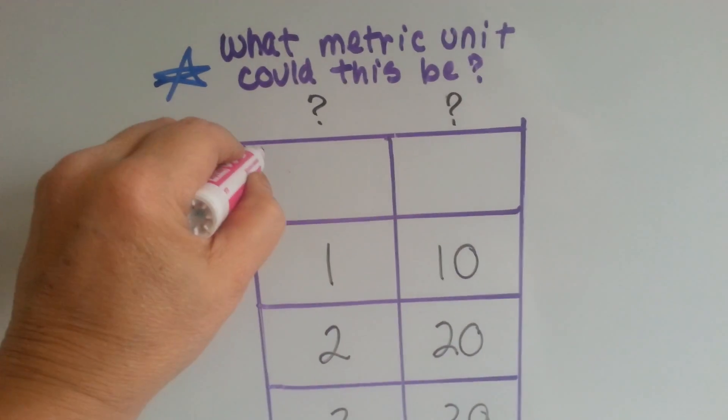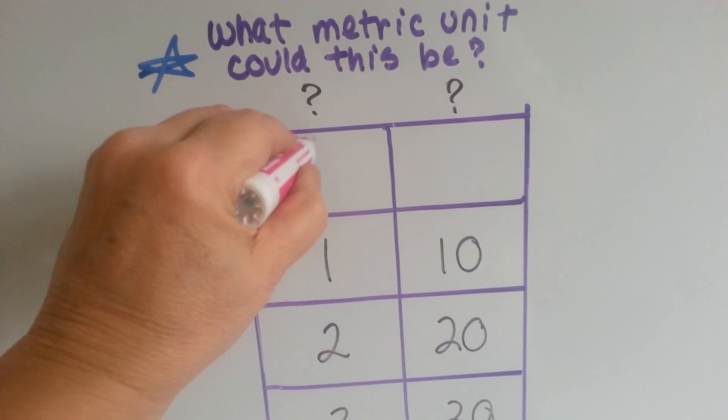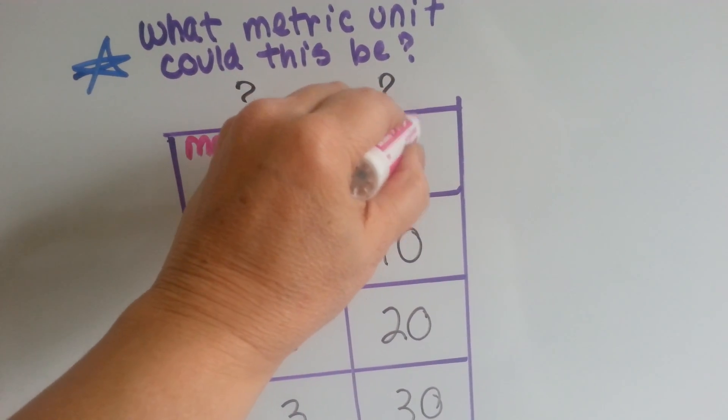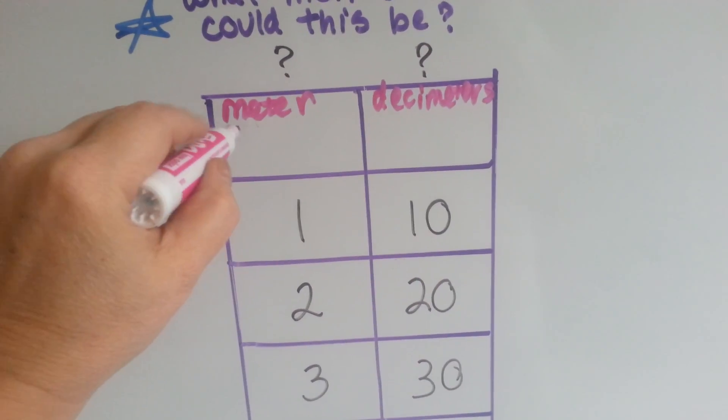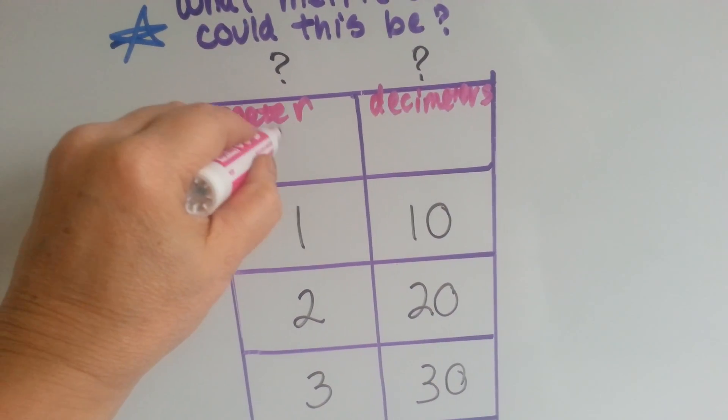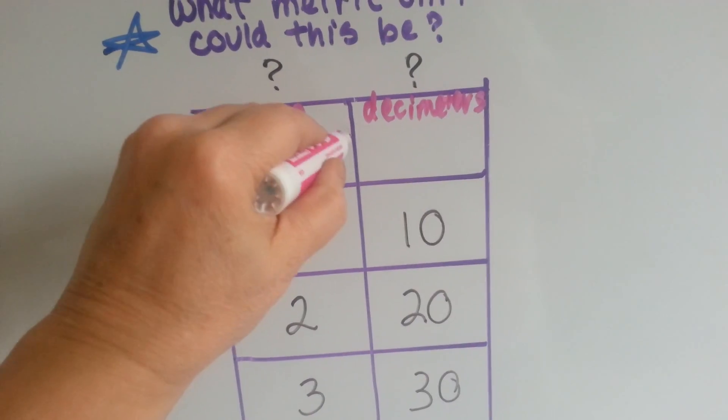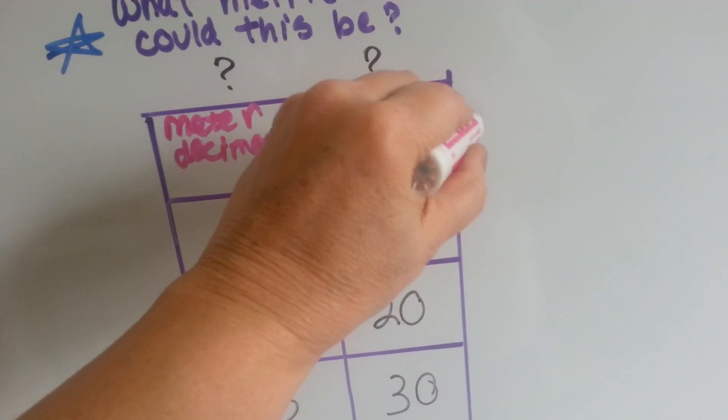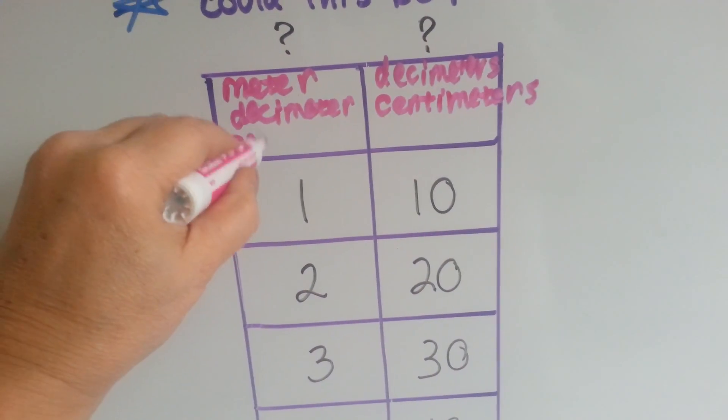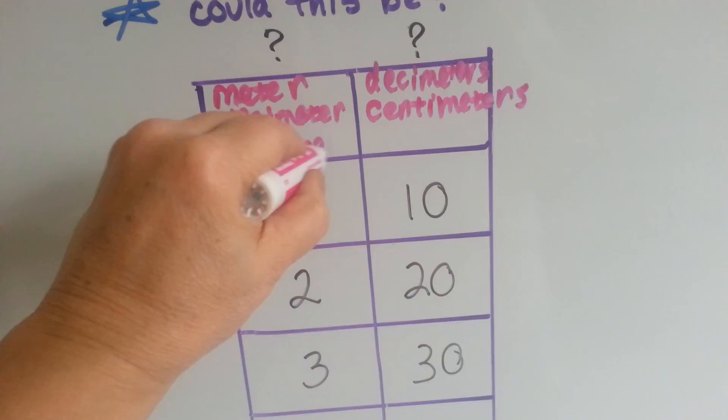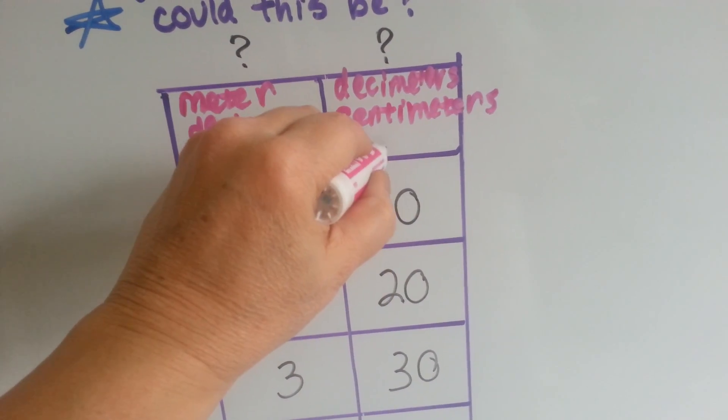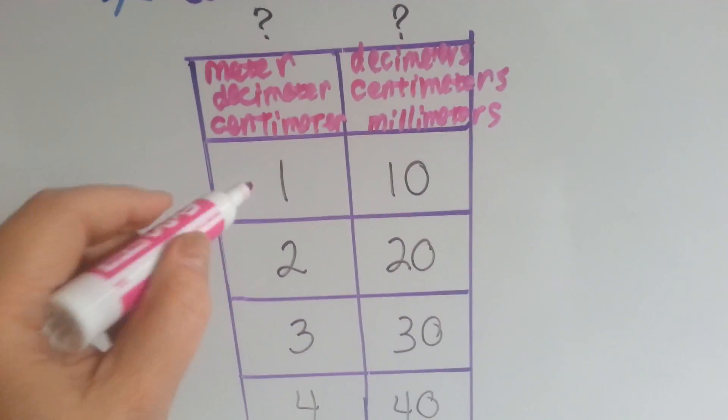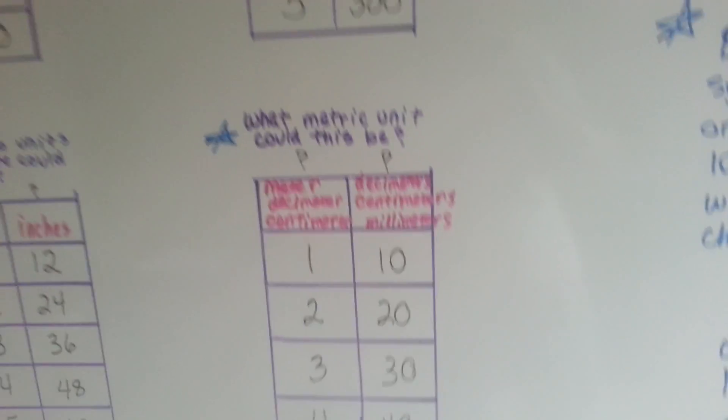This could be one meter is equal to 10 decimeters. It could be one decimeter is equal to 10 centimeters. It could be one centimeter is equal to 10 millimeters. Because the metric system is based off of groups of 10.